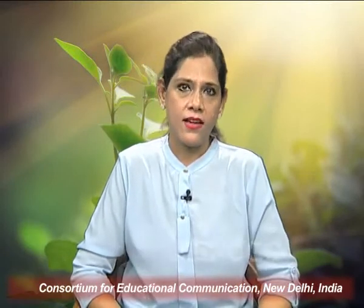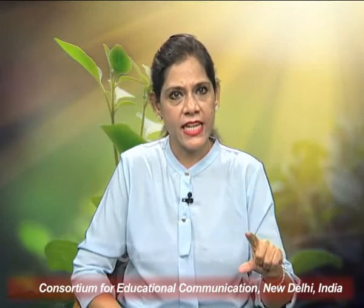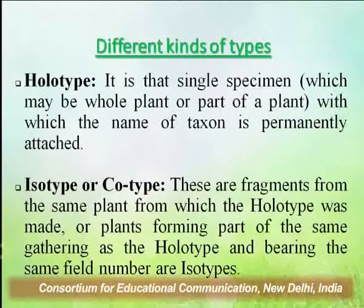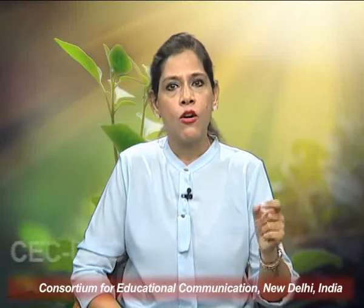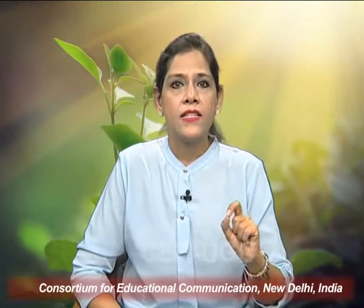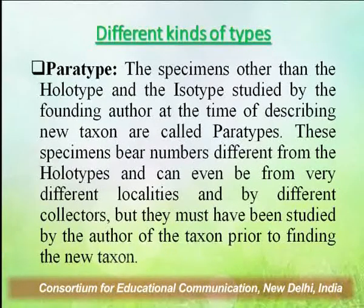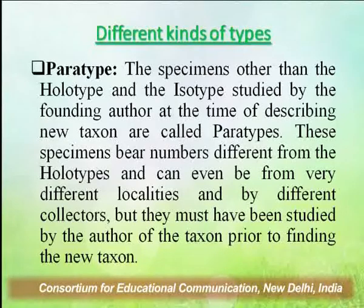Now I will discuss different kinds of types. A holotype is that single specimen — which may be a whole plant or a part of a plant — with which the name of the taxon is permanently attached. The second type is isotype, also known as cotype. These are fragments from the same plant from which the holotype was made, or plants forming part of the same gathering as the holotype and bearing even the same field number. The specimens other than holotype and isotype studied by the founding author at the time of describing a new taxon are called paratypes. These specimens bear numbers different from the holotype and can even be from very different localities and by different collectors.